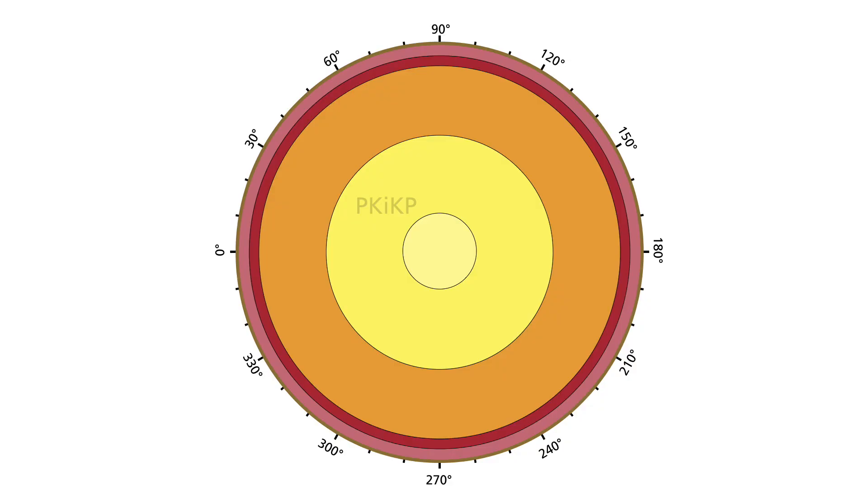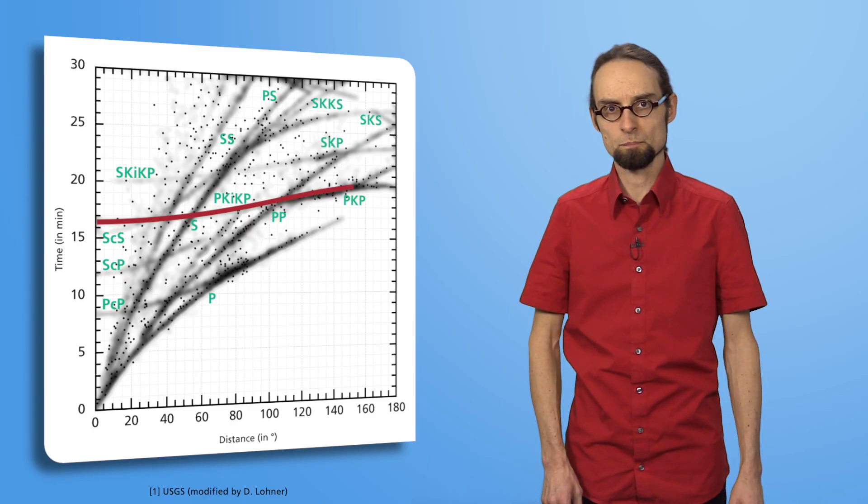The P-K-I-K-P wave is a P-wave which, from the earthquake, first travels through the mantle and then through the outer core. The K here stands for the German Kern. The wave is then reflected at the inner core, I for inner, and emerges back out on the other side of the earth through the outer core and mantle before reaching the recording seismometer. It occurs in various distance ranges, which result in the branch in the travel time graph.